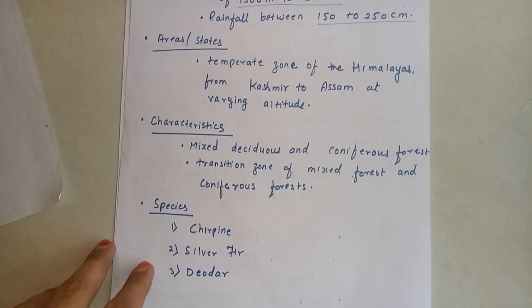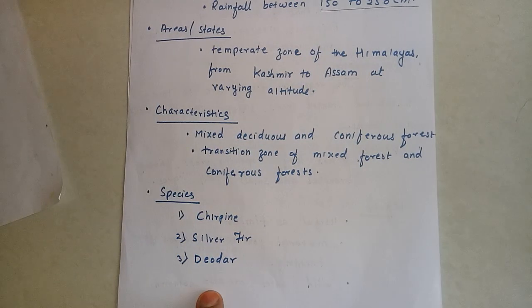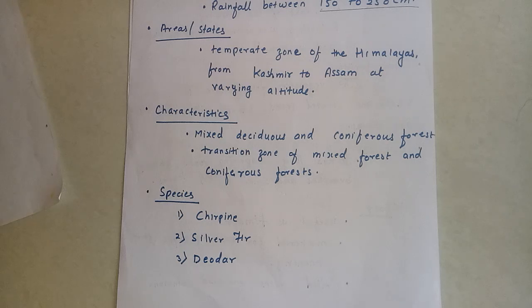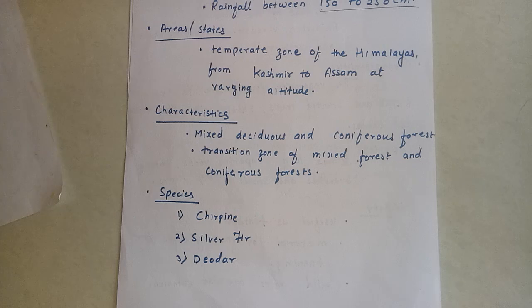Now come to characteristics of these types of forests. They occur in the transition zone of mixed forest and coniferous forest. Species we can get from these forests include spruce, cedar in the north, and eucalyptus found in the Nilgiri. They form high but fairly open forest with shrubby undergrowth including oaks, laurel, bamboo, poplar, and walnut.